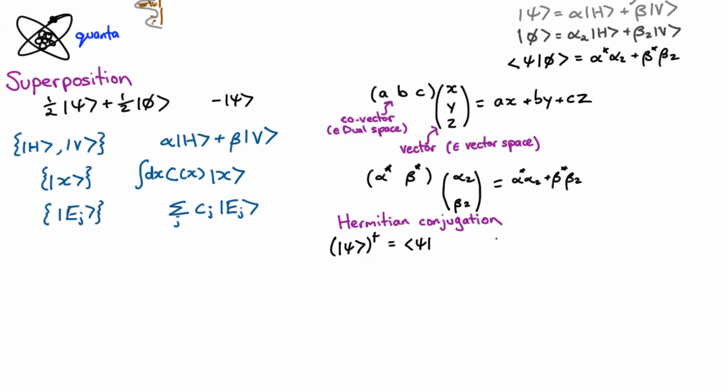If we take the Hermitian conjugate of just a complex number, then that's just the complex conjugate. It's entirely reversible.